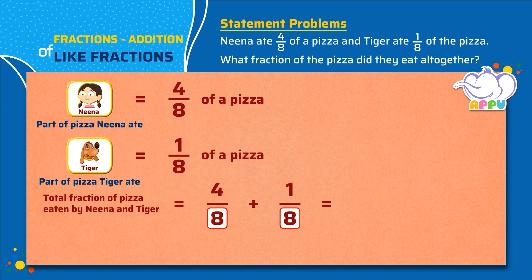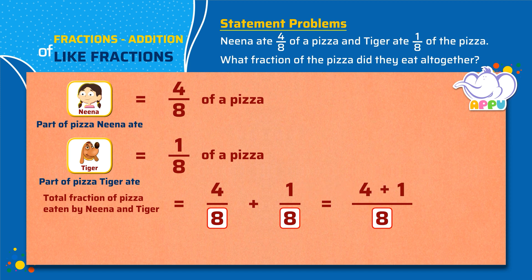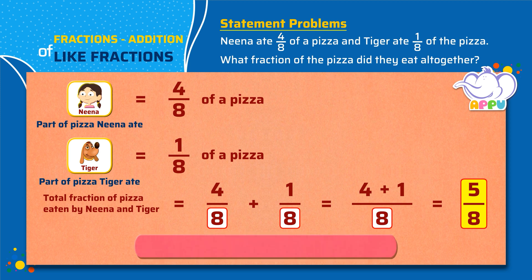We write the denominator as 8 and we add the numerators: 4 plus 1 equals 5. So Nina and Tiger together ate 5 by 8 of the pizza.